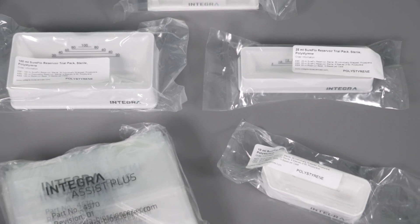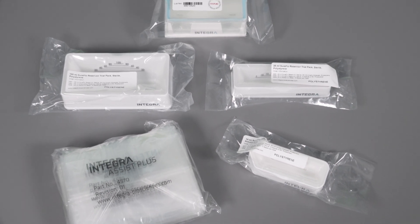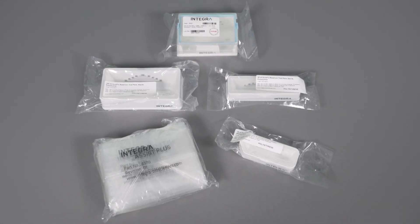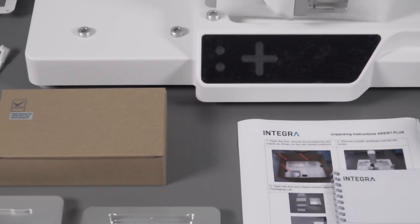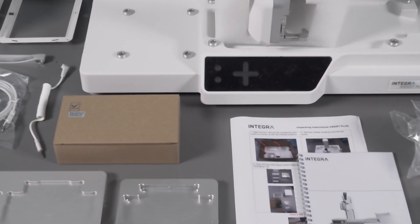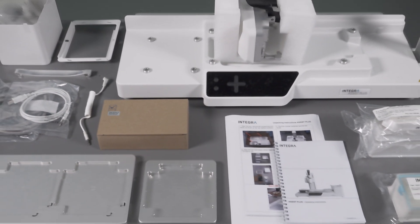The other accessory box contains four reservoir trial packs in different volumes and bags for the waste bin. As a brief summary, here's an overview about all items which are delivered with an Assist Plus base unit.